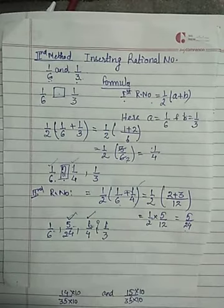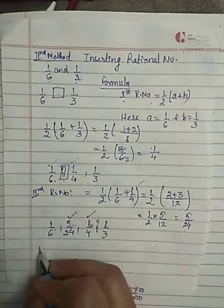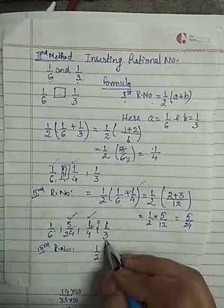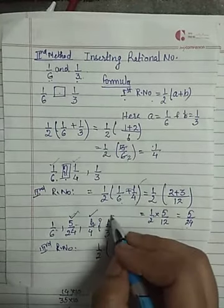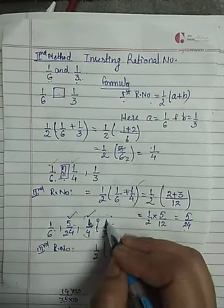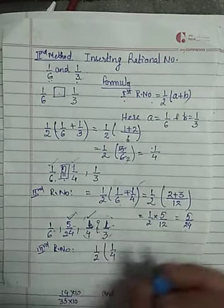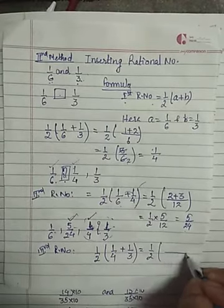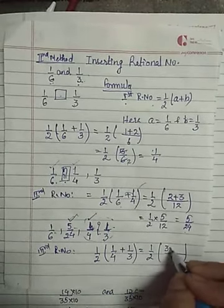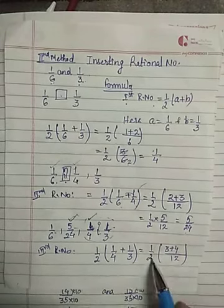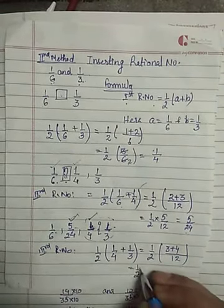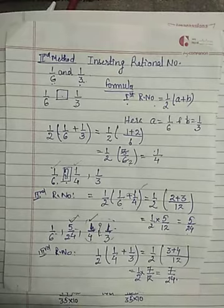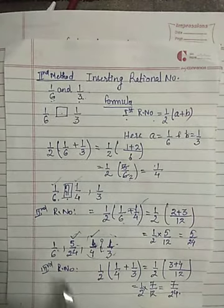I'll insert in between 1/4 and 1/3 using the same average method. Third rational number = half of (a + b), where a = 1/4 and b = 1/3. The LCM of 4 and 3 is 12, so numerator = 3 + 4 = 7, giving 7/12. Then half × 7/12 = 7/24. So the third rational number is 7/24.